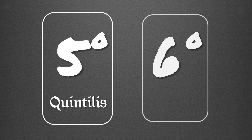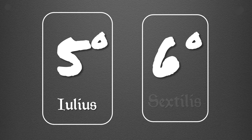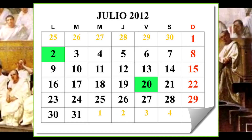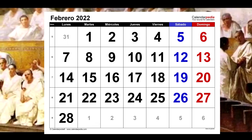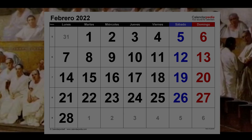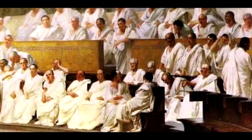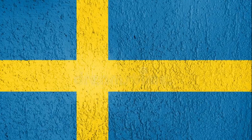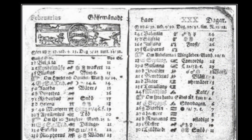A la muerte de Julio César, se dio en su honor el nombre de Julio al mes que hasta entonces se había llamado Quintilis. Y más tarde el emperador Augusto dio su nombre a Sextilis. De este modo, se permitió que Julio y Agosto tuviesen 31 días, quitándole un día a Febrero, que se queda con 28 para mantener la igualdad entre ambos gobernantes.